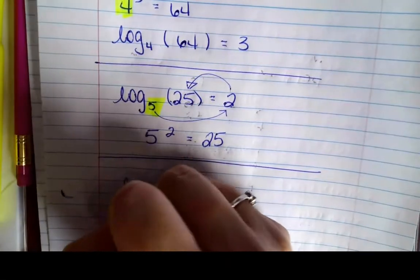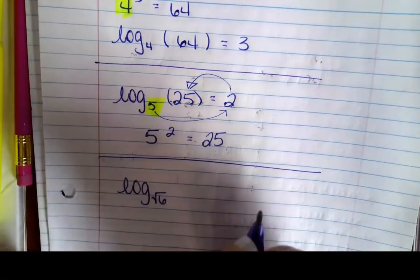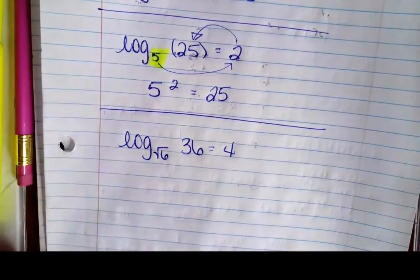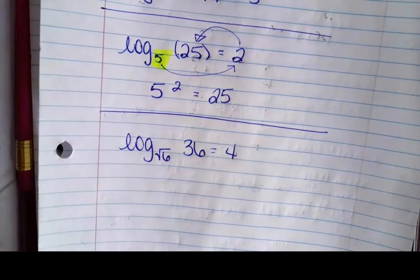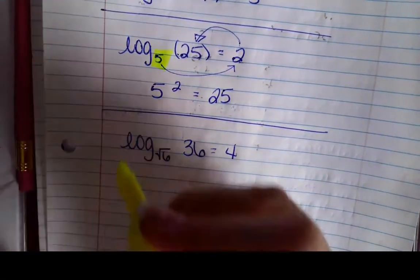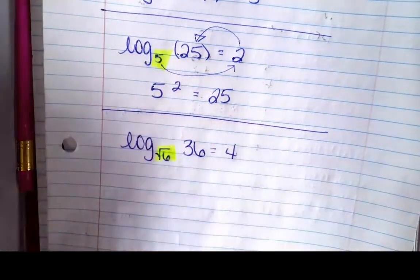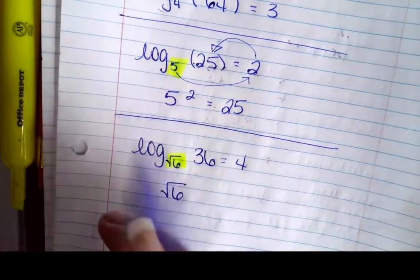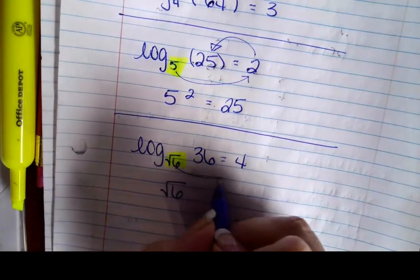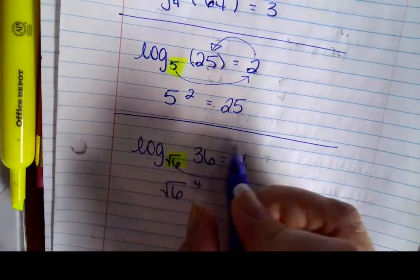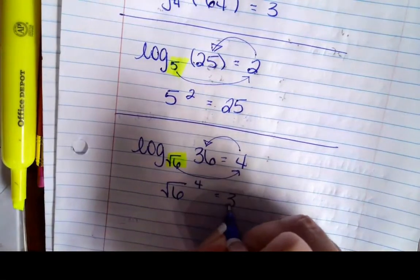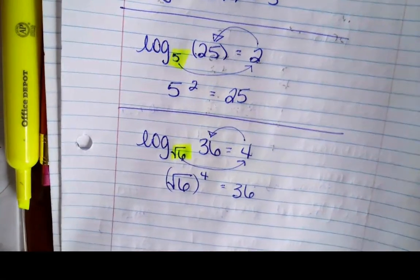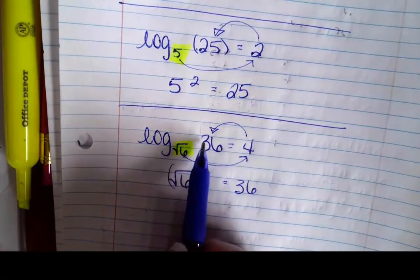What happens if I have log base √6 of 36 equals 4? I'm given this in logarithmic form. Now I want to move it into exponential. So what is my base? My base is the square root of 6, and so I'm going to write that as the square root of 6. Since the log is on the left, I can do a backward circle and say that it's raised to the fourth power, and that equals 36. You can put that in parentheses if it helps you see it more clearly. Root 6 raised to the fourth is 36.